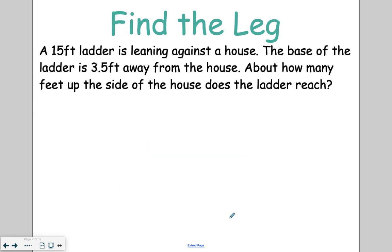We can also use this theorem to help us find the legs. So in this case, we have a ladder leaning up against a house. If it helps, you can draw a little picture. Here's my house, and here's my ladder leaning up against the house. The ladder is 15 feet. The base of it is 3.5 feet away from the house. Notice that is forming a right angle, which means that we're missing one of our legs of our triangle, how far up it goes.